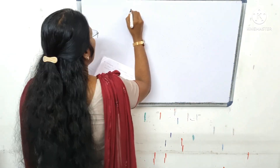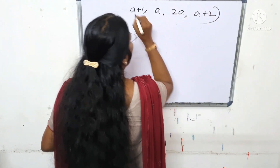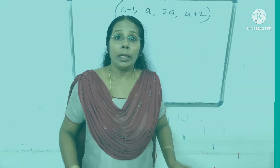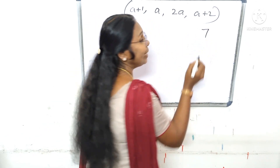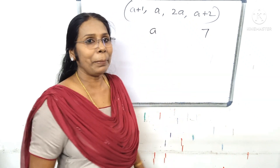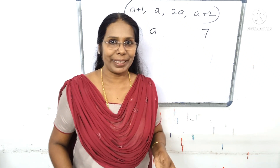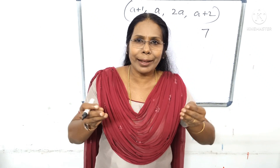The average of seven consecutive natural numbers is A. If the next two numbers are also included, the average of the new set of numbers will be B. Options are: A plus 1, A, 2A, A plus 2. The clue is that the number of seven consecutive natural numbers is A. The average of eight numbers is also A.